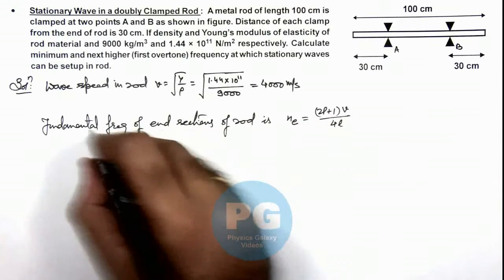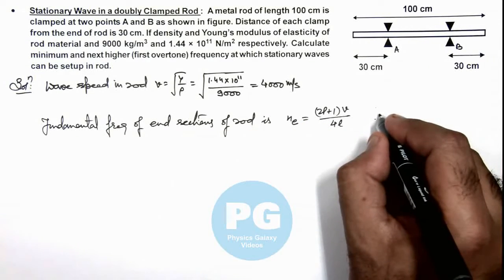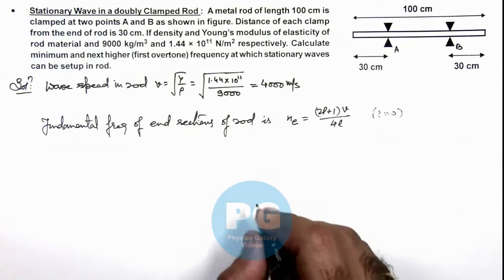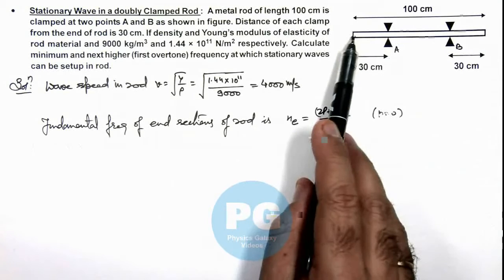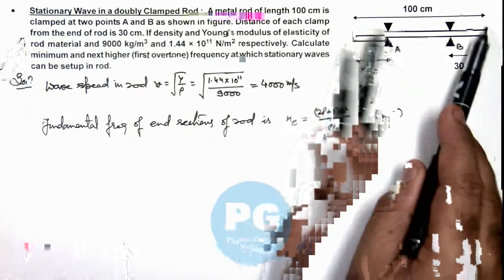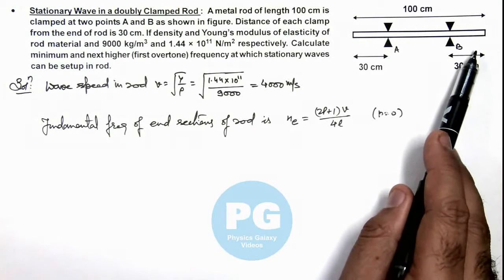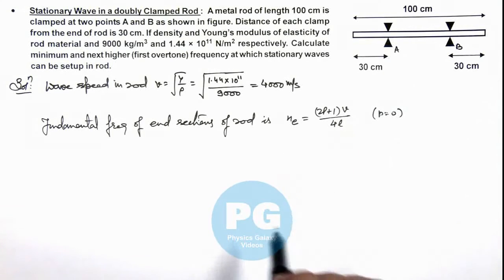So we are writing the fundamental frequency here—we take p is equal to zero. So for any higher harmonic at which this end section will have stationary waves will be given by (2p + 1) v / 4L.